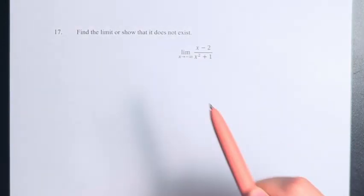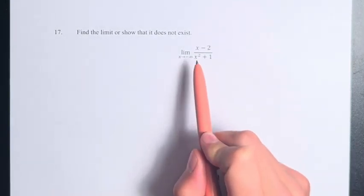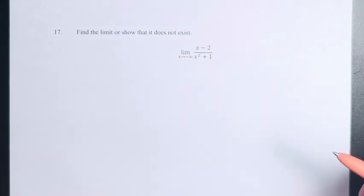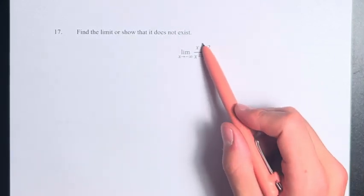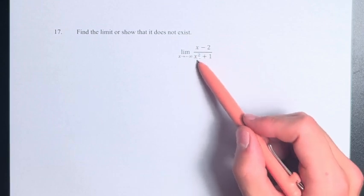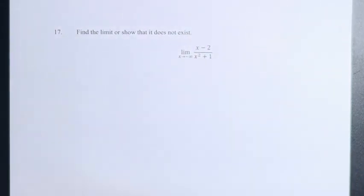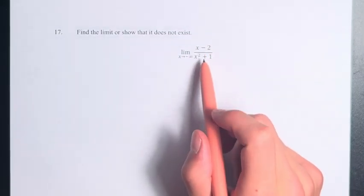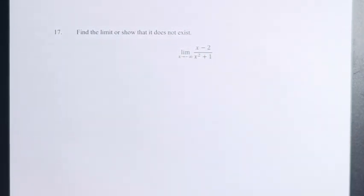We have a limit as x is approaching infinity. In this case, it's negative infinity, but the point stands. When we have a rational function, we have a fraction, if x is going off to infinity, we can ignore every term in the numerator and the denominator that doesn't have the highest degree, that doesn't have the highest exponent of x.